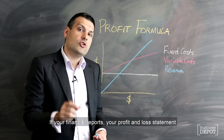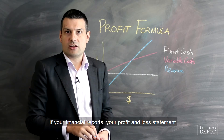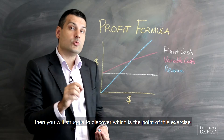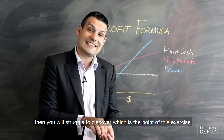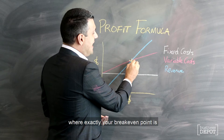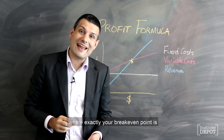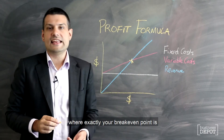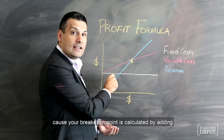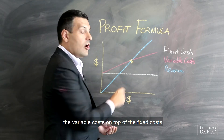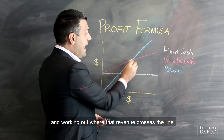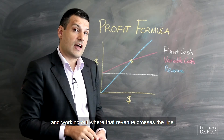If your financial reports — your profit and loss statement — do not separate out fixed and variable costs, then you will struggle to discover where exactly your break-even point is, which is the point of this exercise. Because your break-even point is calculated by adding the variable costs on top of the fixed costs and working out where the revenue crosses the line.